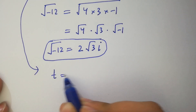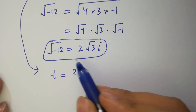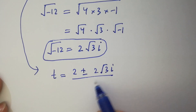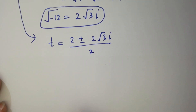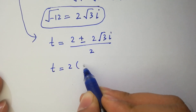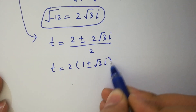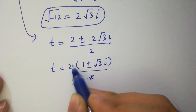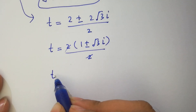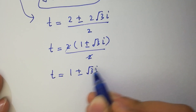Then t equals 2 plus or minus 2 square root of 3 i, over 2. Taking 2 as common, we have 1 plus or minus square root of 3 i, and 2 and 2 cancel. So t equals 1 plus or minus square root of 3 i. We have 2 complex solutions here.